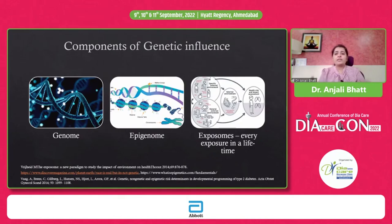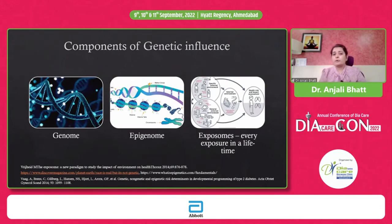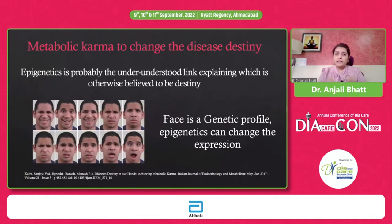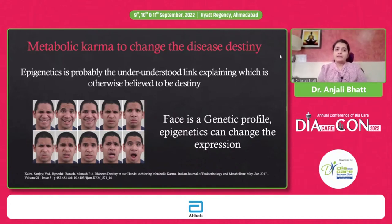Exposomes can be anything specific to an individual, specific to an external environment, specific to an internal environment, or a general external environment. It can be medicine, pollution, nuclear radiation — anything that can affect an epigenomic profile and change how a gene will be expressed in a given human being. Unlike genetic changes, epigenetic changes are reversible and do not change your DNA sequence, but they can change how your body reads a DNA sequence. If you are provided with a face — which can be simulated with a genetic profile — the expression of the face can be compared to epigenetic influences. With the same face you can have different expressions; similarly, with the same genetic makeup, a human being can have different expressions depending on modification at the epigenetic level.